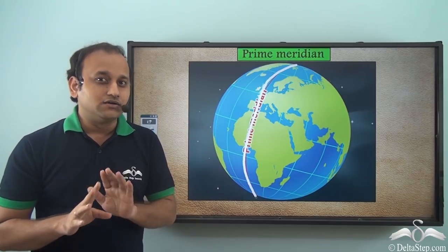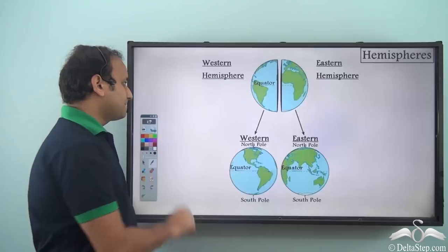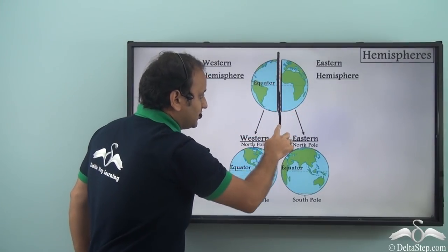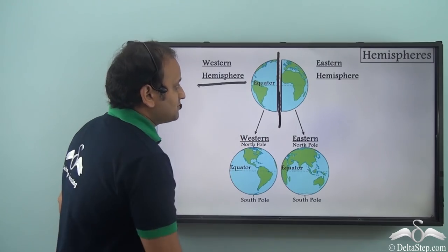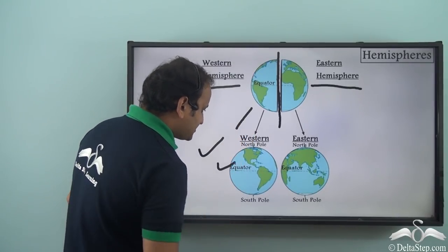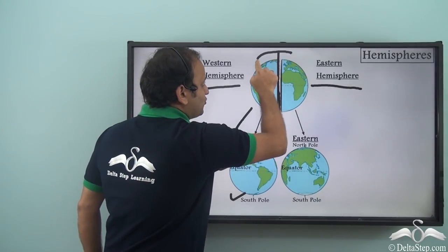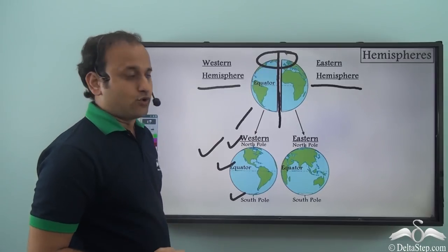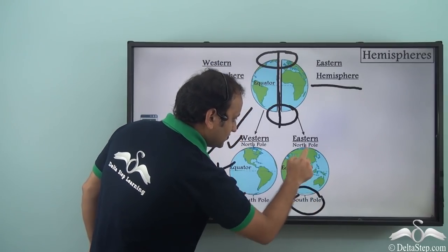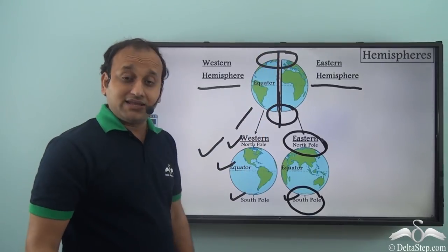Both lines divide the earth equally into two halves. The prime meridian, dividing the earth vertically, gives us the western hemisphere and eastern hemisphere. The northernmost point of our planet is the north pole and the southernmost point is the south pole. These portions of earth are called the poles — the north pole and the south pole.